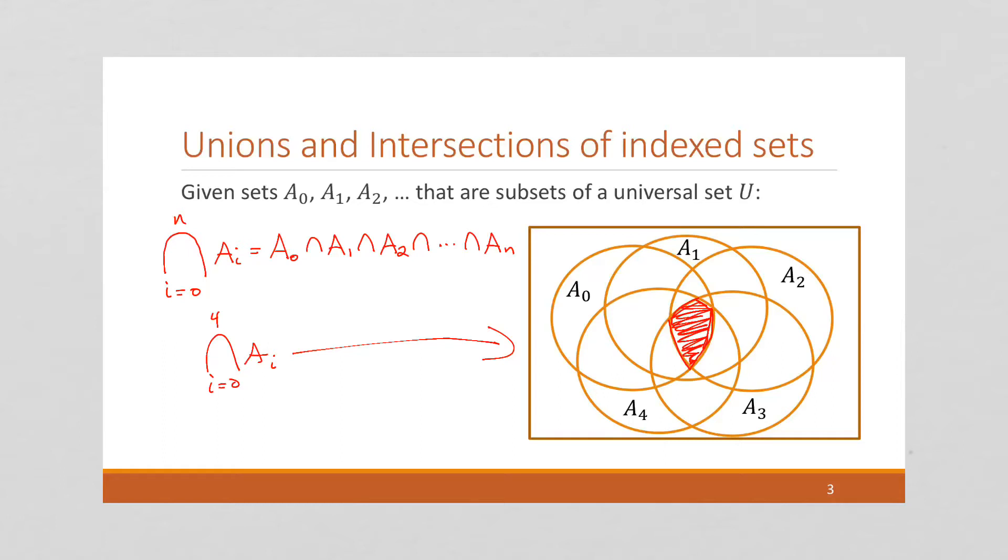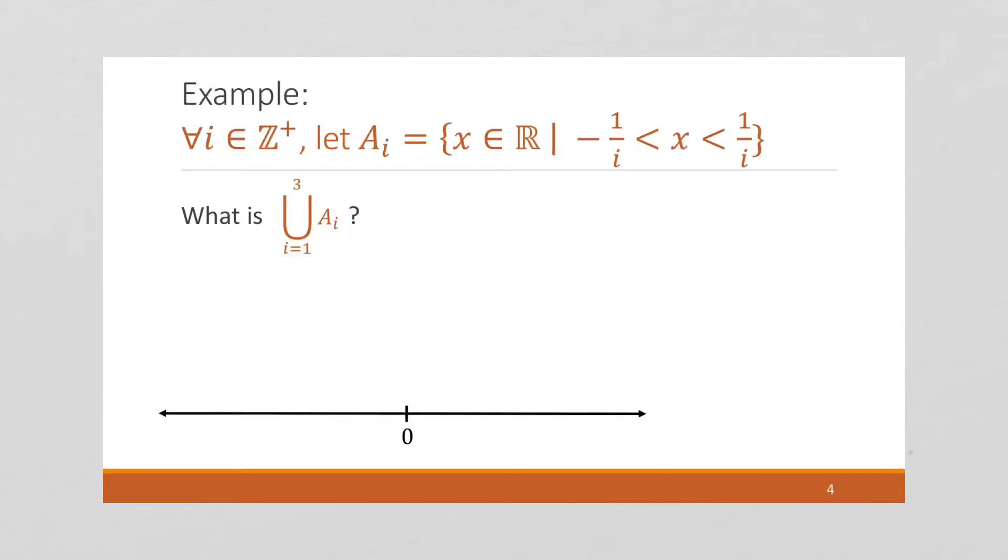So let's see some examples of these in the real world. So here we have a set. We say for all i in the positive integers, we're going to define A_i to be the set containing all real numbers x, such that x is between negative 1 over i and positive 1 over i. So this question is asking, what is the union of the sets from i equals 1 to 3?